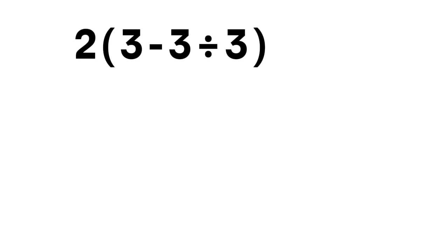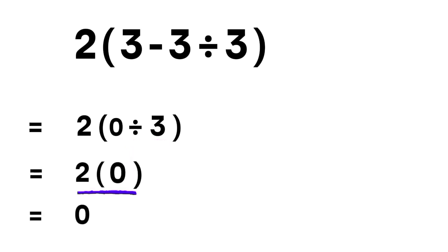Some people might begin by doing 3 minus 3, which equals 0. So they rewrite it as 2 times 0 divided by 3, and 0 divided by 3 gives us just 0. Then they say 2 times 0, and 2 times 0 is equal to 0.